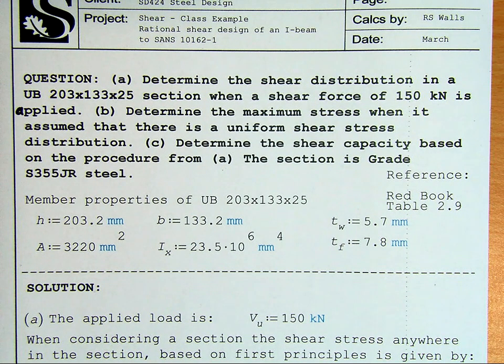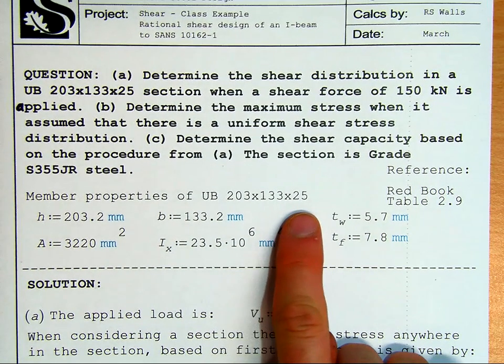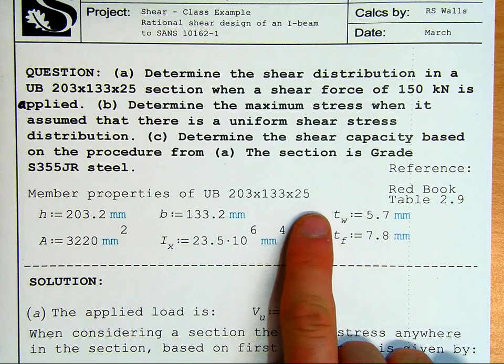And then B, determine the maximum stress when it is assumed that there's a uniform shear stress distribution, so Part A will be rational design, Part B will be simplified design, and then Part C, determine the shear capacity based on the procedure from A. The grade is 355JR steel, and our member properties of a UB203-13325 are given here.